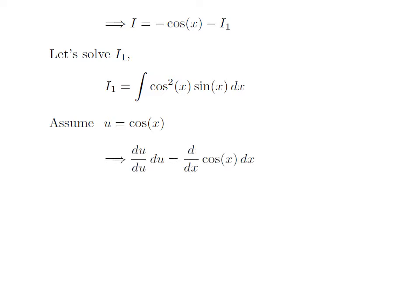Taking the differential of both sides, we get du = d(cos(x))/dx · dx. Since d(u)/du is equal to 1, and the differentiation of cos(x) with respect to x is equal to -sin(x), we are left with du = -sin(x) dx. Taking the minus to the left, we get -du = sin(x) dx.